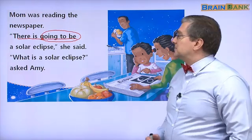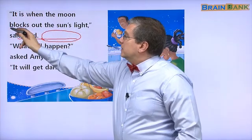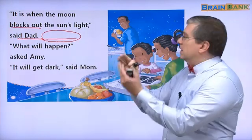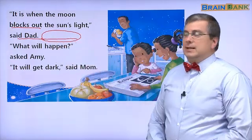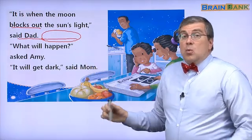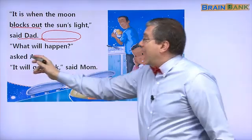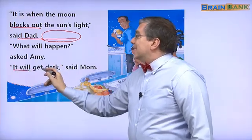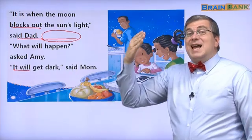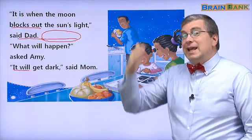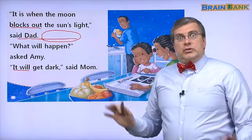It is when the moon blocks out the sun's light, said dad. Here is dad. 'What will happen?' asked Amy. It will get dark. It will get dark. It will be like night — 밤에 비슷한데요. It will get dark — no light, said mom.